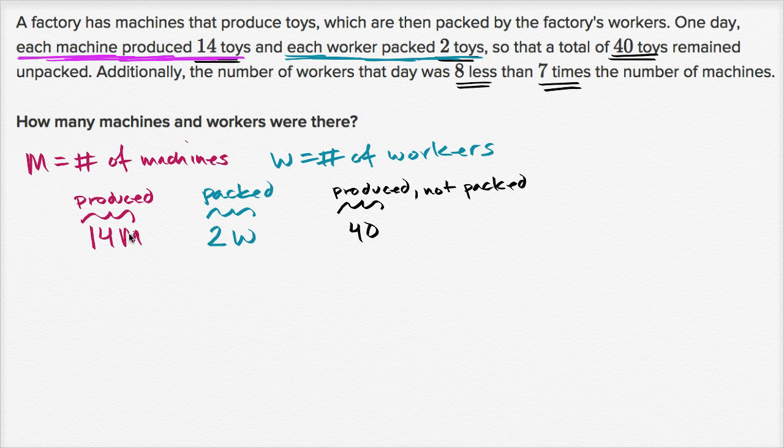How do we relate produced and packed to the produced that are not packed? If we take the total that were produced and subtract out the number that were packed, we're left with the total that are unpacked. So just like that, we were able to set up a linear relationship between M and W.